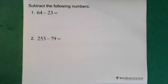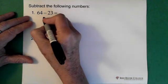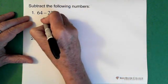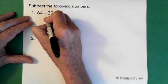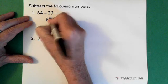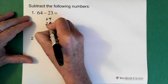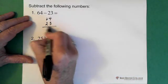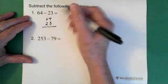64 minus 23. So just the same as we do in addition, we line up our tens and our ones. So 64 and 23. Now what we do is just subtract.